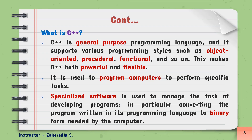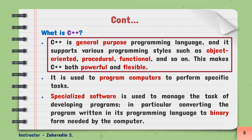Now let us discuss about what C++ programming language is. As you see here, C++ is a general purpose programming language and it supports various programming paradigms such as object-oriented, procedural, functional, and so on. This makes C++ both powerful and flexible.